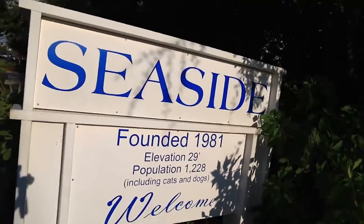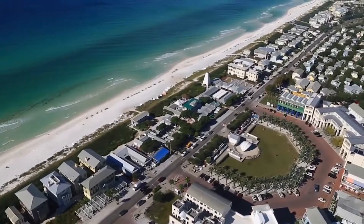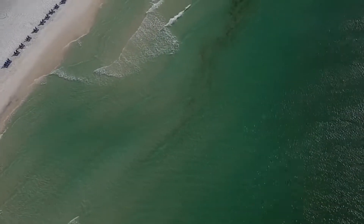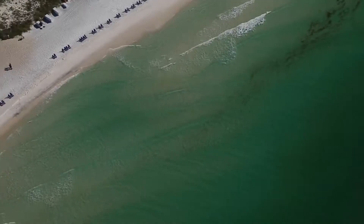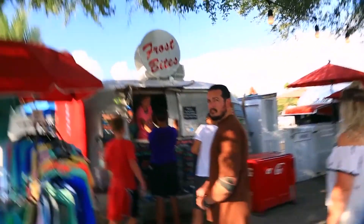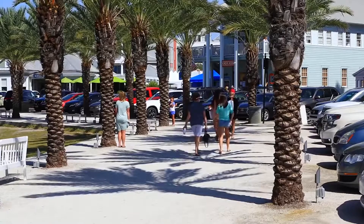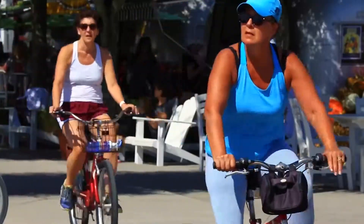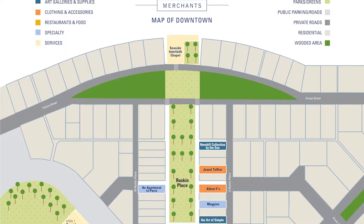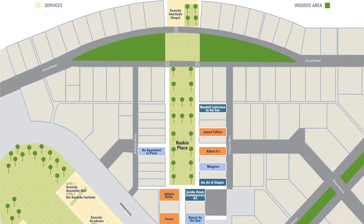Seaside, Florida is the first fully developed new urbanism town. Construction began in 1981 on an 80-acre patch of Florida's Gulf Coast and was influenced by Robert Davis. Davis had the vision to create a town with beautiful views, walkable streets, a strong sense of community and connectivity, mixed use, mixed housing, and a focus on public spaces over private spaces.